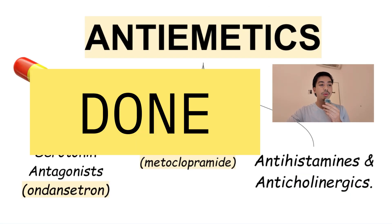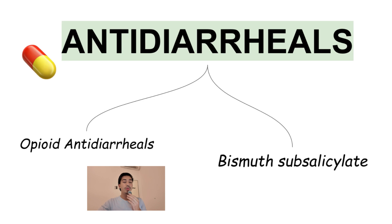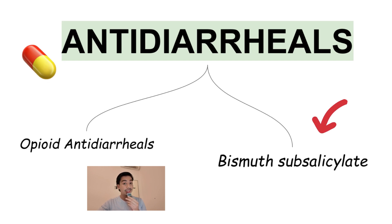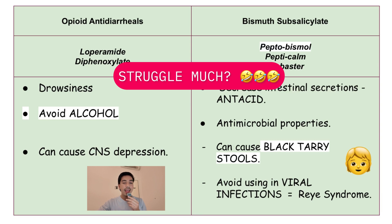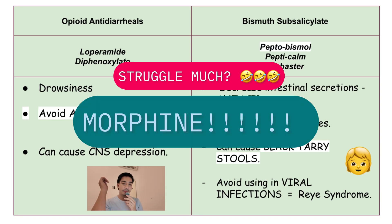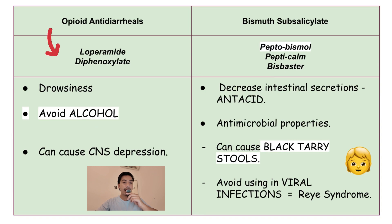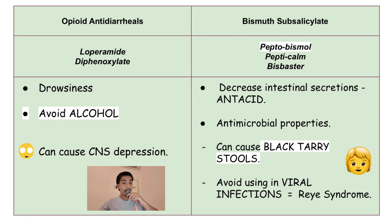Let's proceed to anti-diarrheals. We have two types: opioid anti-diarrheals and bismuth subsalicylate. Opioid anti-diarrheals can cause drowsiness. Examples of opioid anti-diarrheals are loperamide and diphenoxylate. They can cause drowsiness, so we must avoid alcohol to avoid CNS depression, which is very deadly.